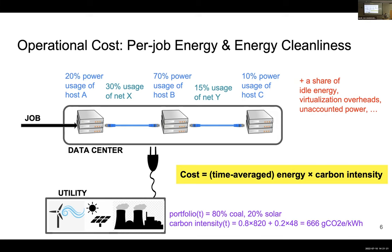Once we have this detailed information, we can calculate the end-to-end operational sustainability cost for a particular job by summing its energy use across different data center hardware and networking devices. Then, considering different carbon intensity values from different energy sources — for example, 80% from coal and 20% from solar gives a blended carbon intensity of roughly 666 grams per kWh — we can compute the grams of CO2 equivalent. The key message is fine-grained measurement combined with energy cleanness information.